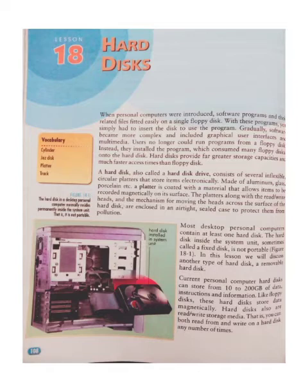Most desktop personal computers contain at least one hard disk. The hard disk inside the system unit is sometimes called a fixed disk and is not portable. Another type of hard disk is a removable hard disk. Current personal computer hard disks can store from 10 to 200 GB of data, instructions, and information.